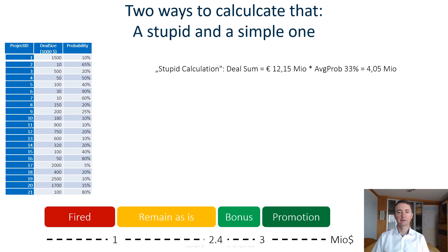Let's quickly take a look at the very stupid one. If he sums up the total deal sum, which is 12.15 million, and multiplies it with the average probability that a project comes in, which is 33%, he ends up with 4.5 million, where he would find himself in the promotion area. However, we all agree that this is quite a stupid calculation which should not be performed.